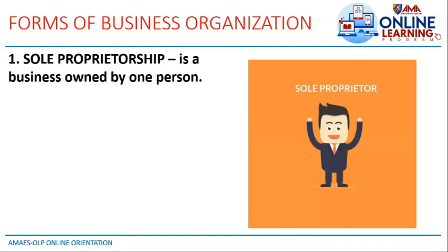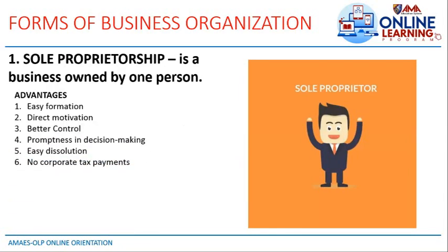The first form of business organization is sole proprietorship — a business owned by one person. An example of this is the sari-sari store or even small businesses. Let's look at its advantages.